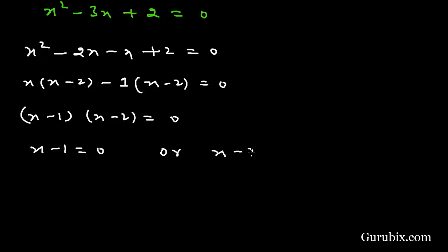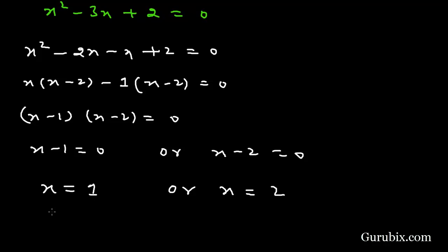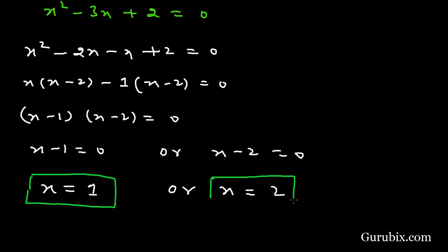Setting each factor to zero: x minus 1 equals 0 gives x equals 1, and x minus 2 equals 0 gives x equals 2. We observe that both values are other than minus 4 and 7, so these are the roots of the given equation. This is the solution of the question. Thank you.